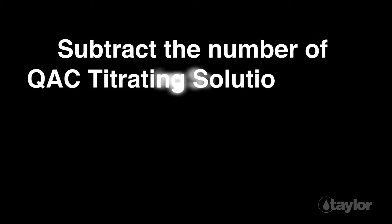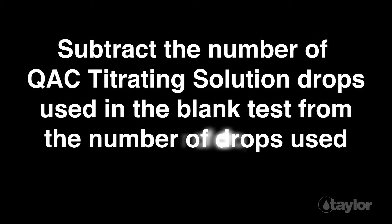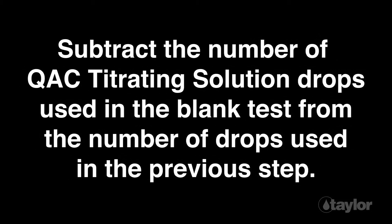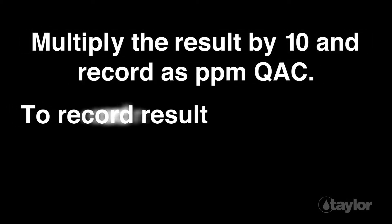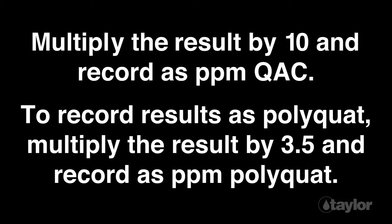Subtract the number of QAC titrating solution drops used in the blank test from the number of drops used in the previous step. Multiply the result by 10 and record as parts per million QAC. To record results as polyquat, multiply the result by 3.5 and record as parts per million polyquat.